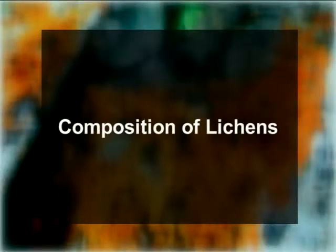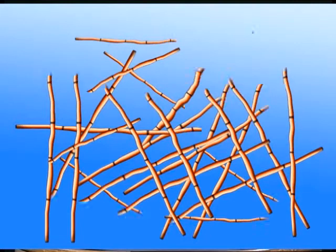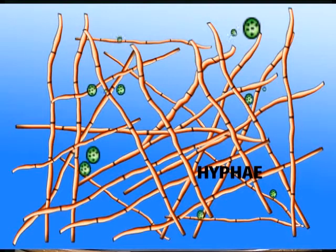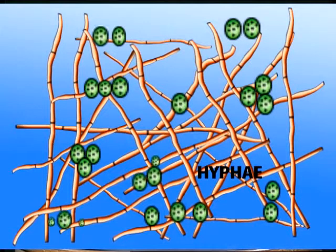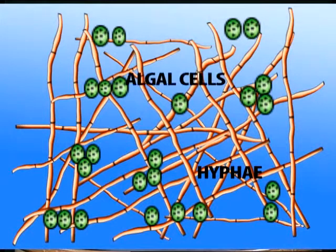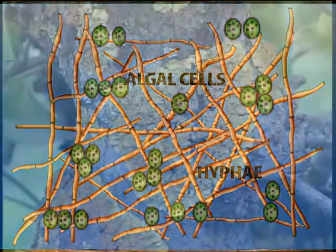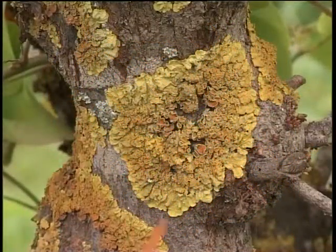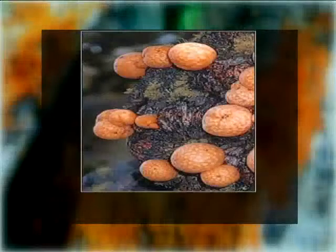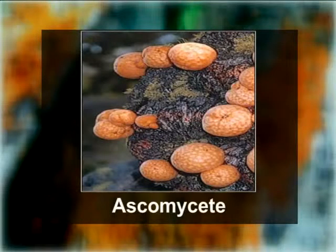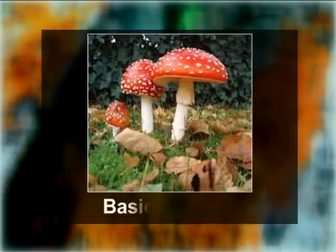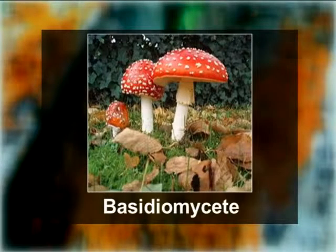Composition of lichens: A lichen is an association of an alga and a fungus in which two organisms remain so closely associated with each other that they appear to be a single plant. The fungal component of lichens is generally an ascomycete. In only two or three genera out of four hundred, the fungal component is a basidiomycete, and only rarely a deuteromycete.